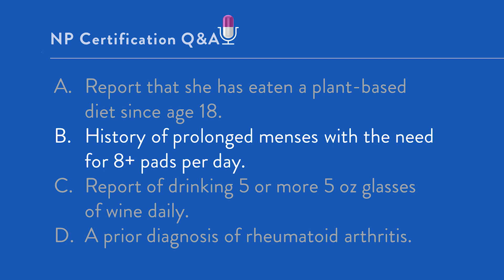Looking at option A — a report of eating a plant-based diet since age 18 — a well-balanced plant-based diet poses very little anemia risk, so we can eliminate that. For option C, the report of drinking five or more 5-ounce glasses of wine per day: a standard drink is 12 ounces of beer, 5 ounces of wine, or 1.5 ounces of hard liquor. Heavy drinking does increase the risk for folic acid deficiency anemia, but folic acid deficiency anemia presents as a macrocytic, not a microcytic anemia — so we can eliminate option C immediately.